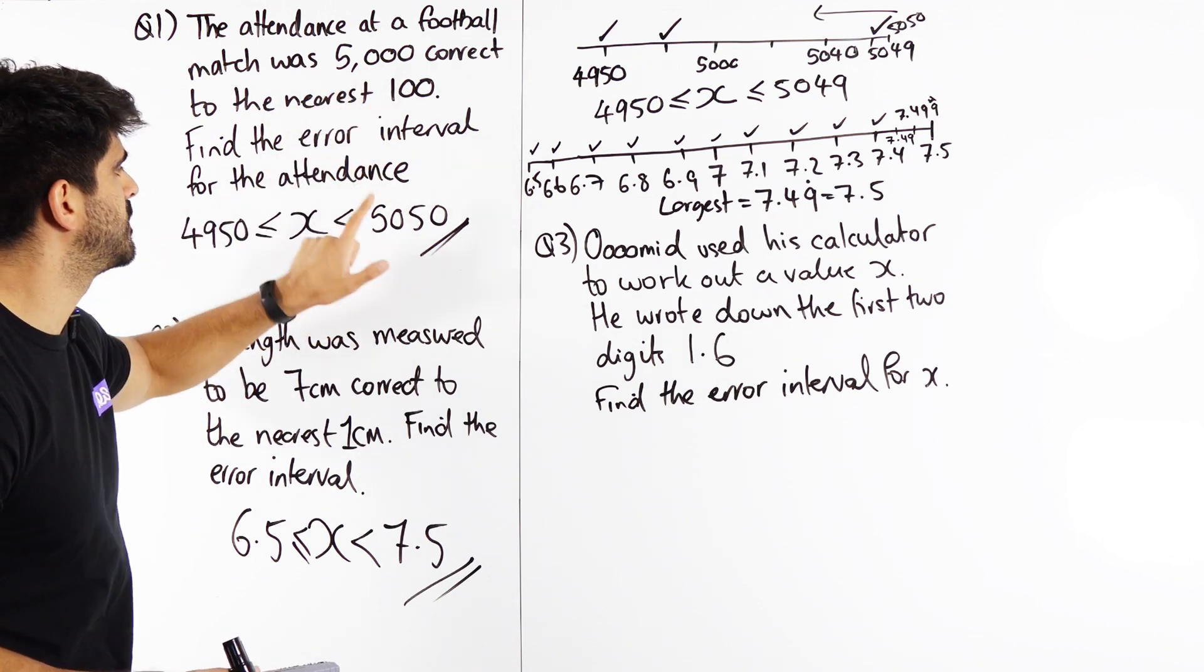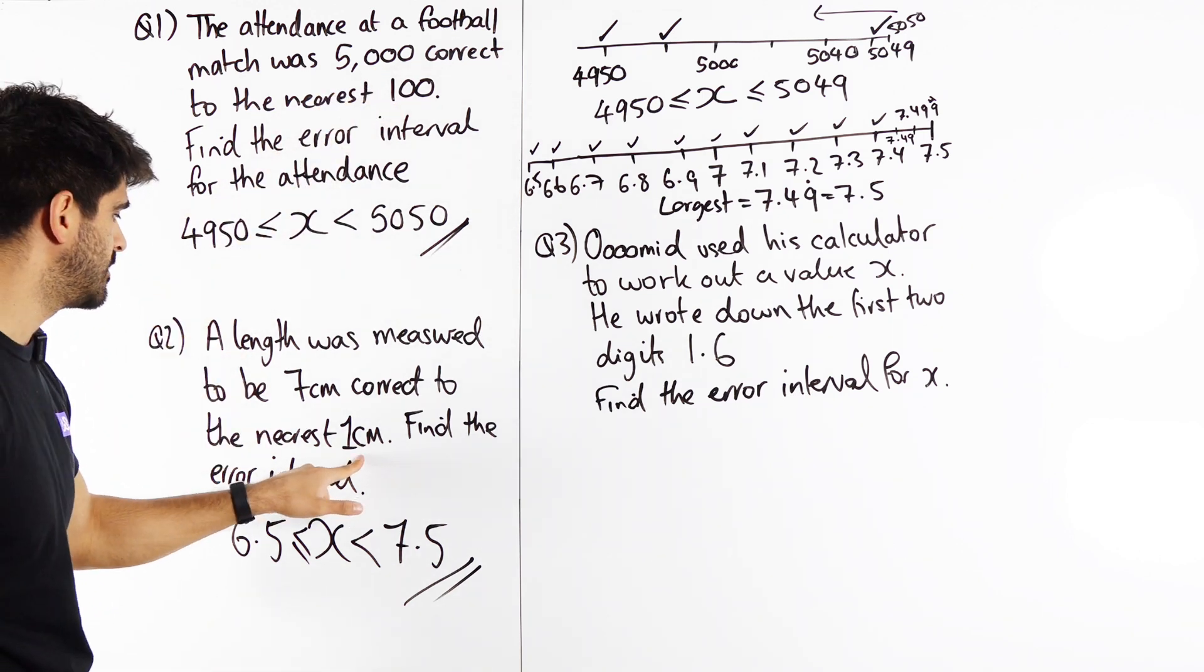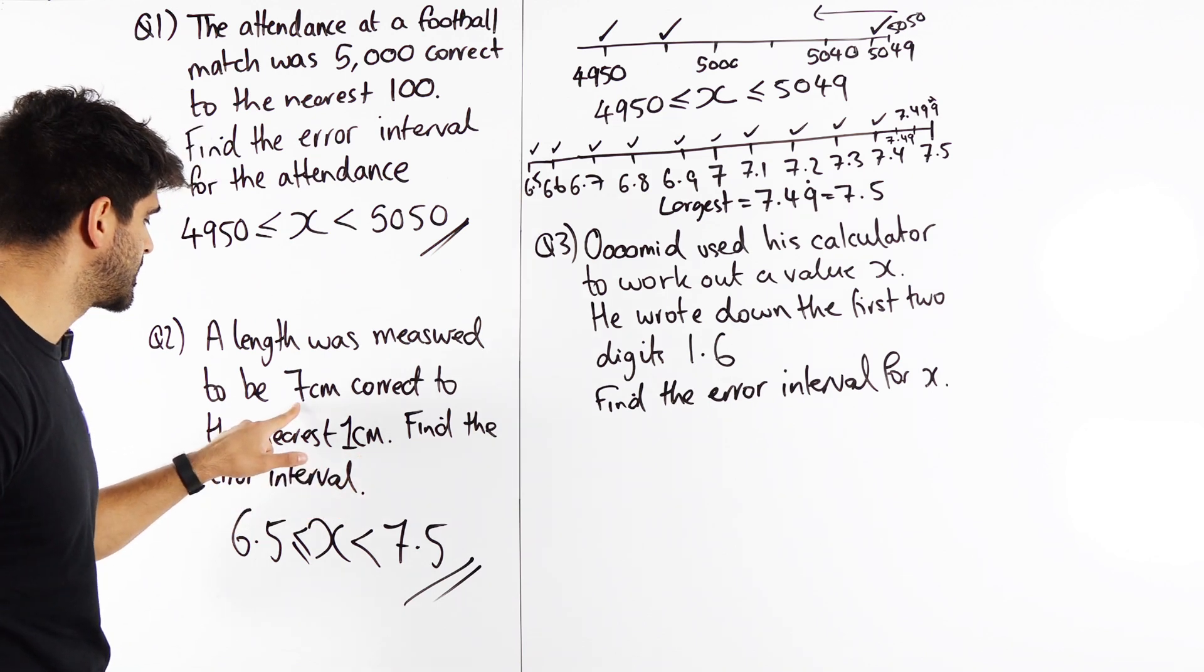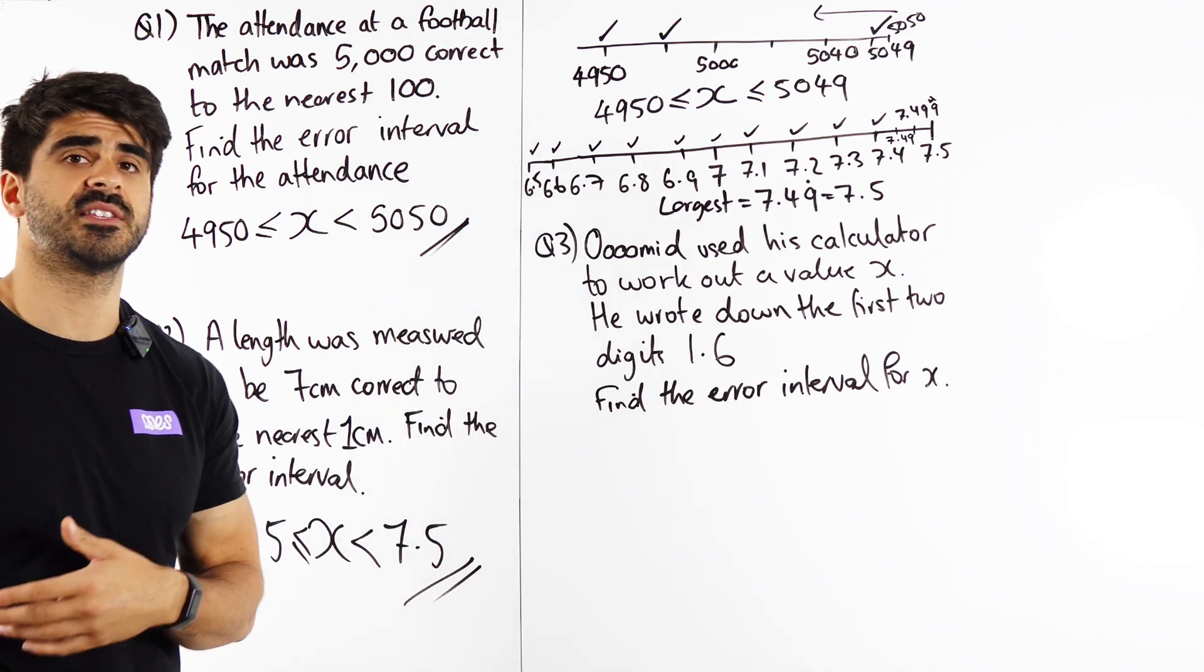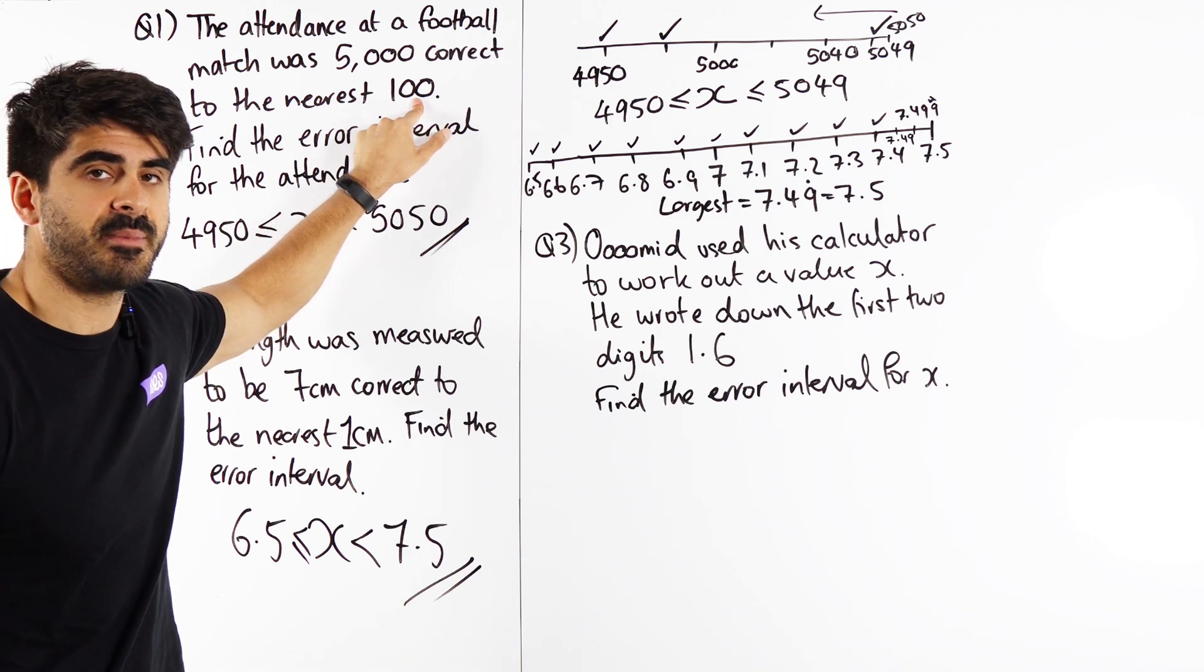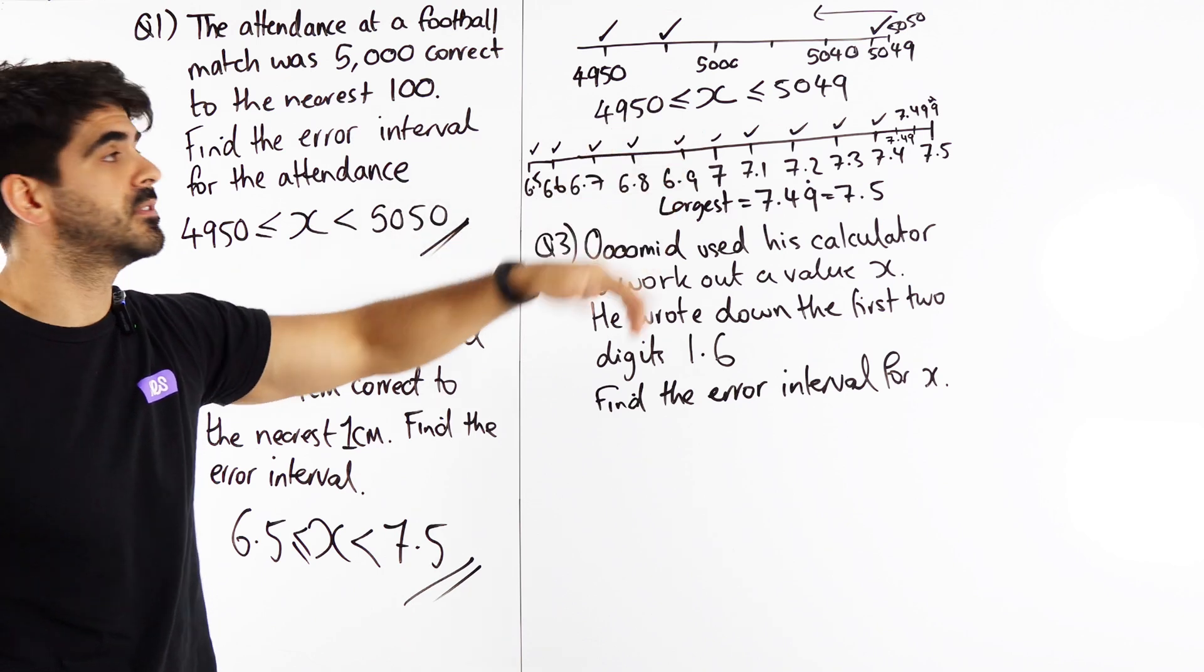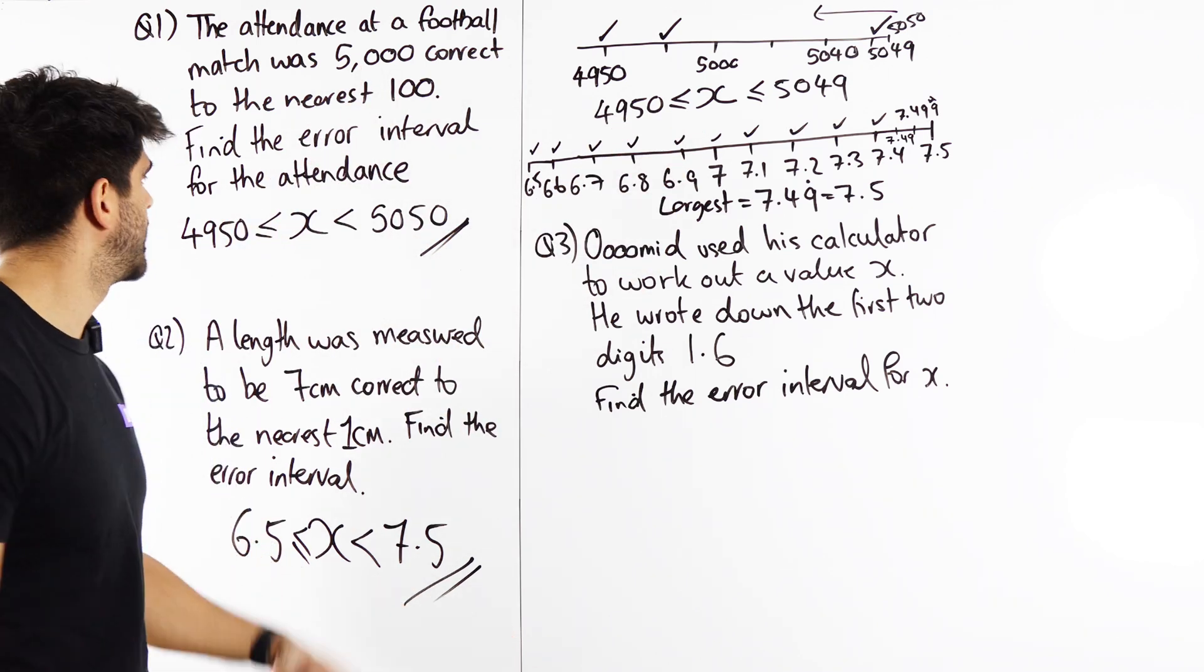100 divided by 2 is 50. 5000 plus 50, 5000 minus 50. If that's your error, 1, you divide that by 2, 0.5. 7 plus 0.5. 7 minus 0.5. Which means if I give you guys a different error, say here if I said nearest 10, 10 divided by 2 is 5. 5000 plus 5 would be 5005. 5000 minus 5 would be 4995. And that would be your answer.